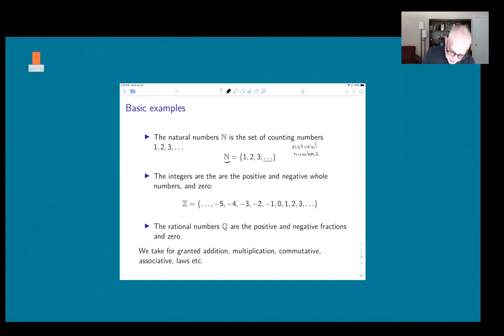The integers are the positive and negative whole numbers together with zero. Taking advantage of the dot, dot, dot notation, I've written the set of the integers here by listing out some representative integers: minus 5, minus 4, minus 3, and so forth. The standard symbol for the integers is Z. This comes from the German Zahlen, which means number. And so somehow the Z got stuck for the integers.